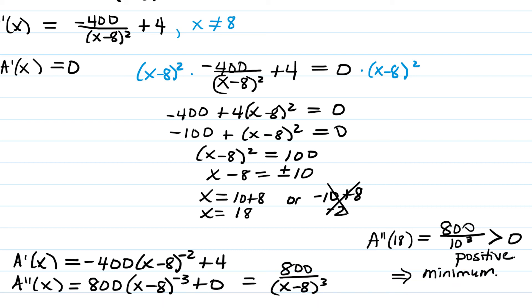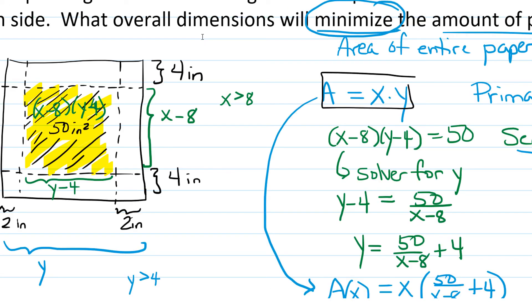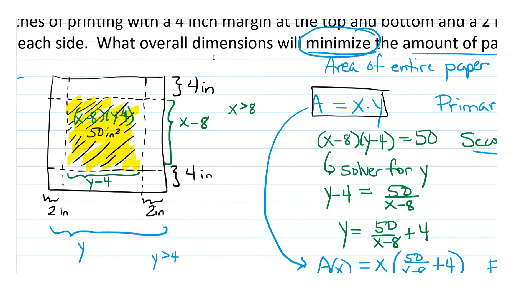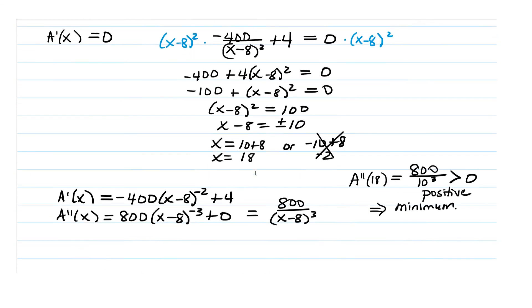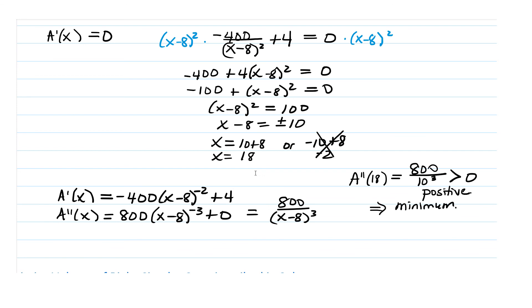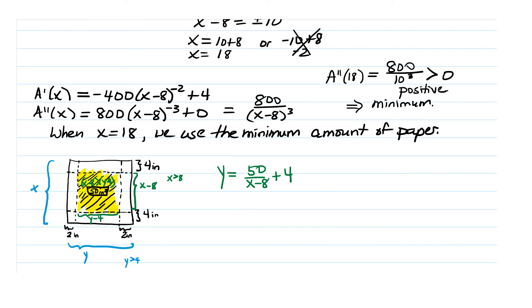Now, what did A represent again? I want to be clear about this because there's potential for confusion in this problem. We're talking about two different areas. A, remember, was X times Y, which was the entire area of the whole sheet of paper. We were trying to minimize the amount of paper. We're not minimizing the writing area. The writing area is fixed at 50 square inches. We're just minimizing the amount of paper. So we just found that we get a minimum amount of paper when the dimension X is 18. When X equals 18, we use the minimum amount of paper. But in order to answer the question that was asked, we need to give both dimensions, so we need to find Y as well.